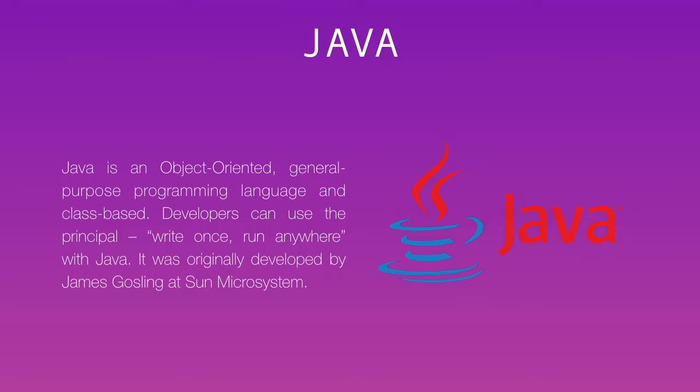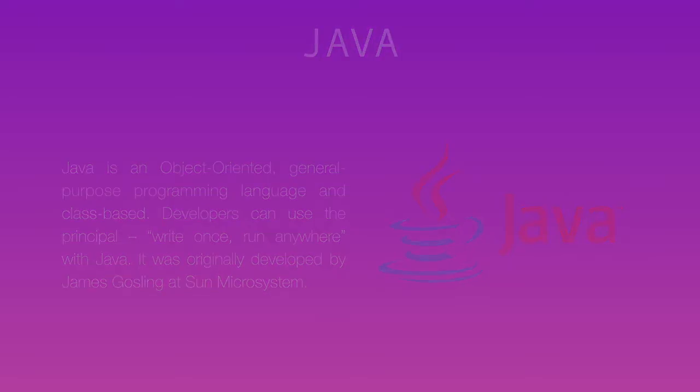So James Gosling developed a platform-independent language which is Java. After a few years, Java was bought by Oracle from Sun Microsystems, and then the level of Java just boomed like magic. More than 300 billion devices are approximately running using the Java programming language, making it a very highly popular language.